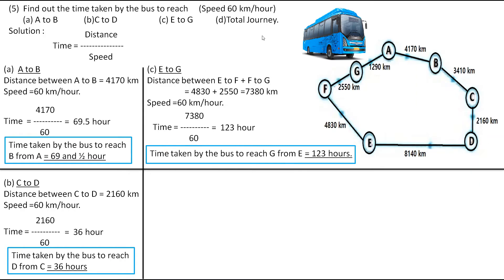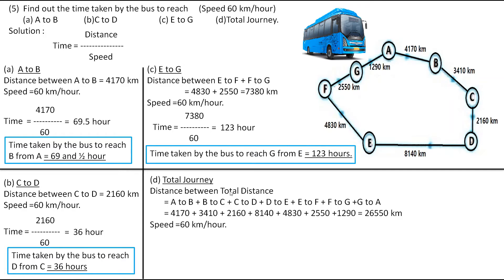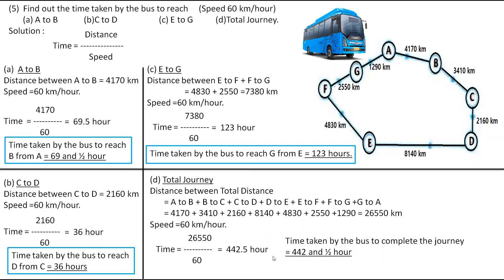Now the fourth one is the total journey. To find the total journey time we use the total distance of 26,550 km and speed of 60 km/hr. So time = 26,550 / 60, which gives 442.5 hours. The time taken by the bus to complete the full journey is 442.5 hours.